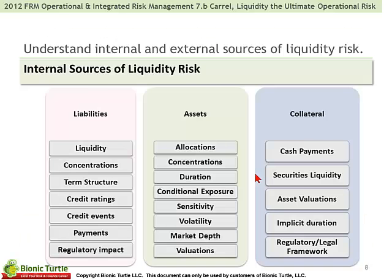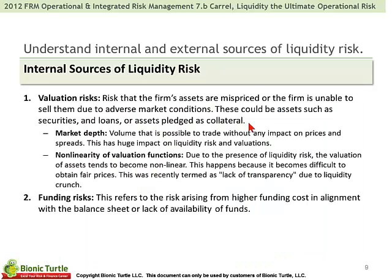There is a bifurcation into internal sources of liquidity risk — his typology being liabilities, assets, and collateral — and then there are two internal sources of liquidity risk. One is valuation risk: the risk that the firm's assets are mispriced or the firm is unable to sell them due to adverse market conditions. Sub-points here include market depth and non-linearity of the valuation function.